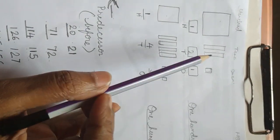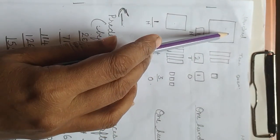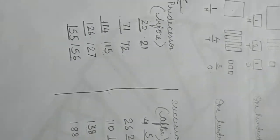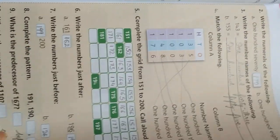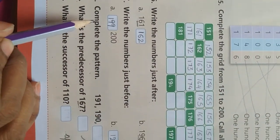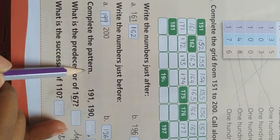So today I have taught you tens, hundreds, tens and ones — how to write in the boxes and with the number names, and predecessor numbers and successor numbers — that is before numbers and after numbers. Now we will look at the next page — complete the pattern.